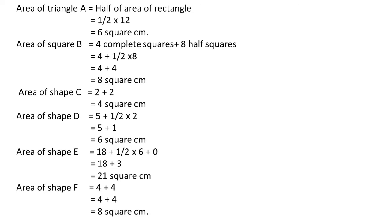Then area of shape E is equal to 18 plus half into six. That means half-filled squares are six, plus zero. Zero means that is one-by-four — these we are considering as zero. So, plus zero. 18 plus half into six — how much? Three. So, 18 plus three — how much? 21.